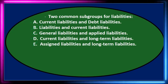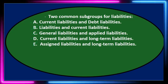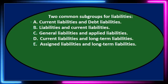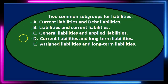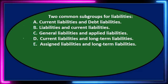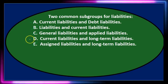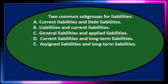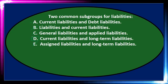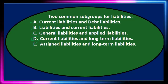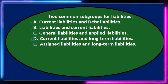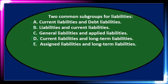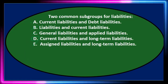The question again: two common subgroups for liabilities. Between A, current liabilities and debt liabilities, and D, current liabilities and long-term liabilities, the answer is D: current liabilities and long-term liabilities.